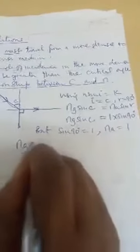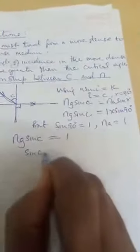So our n glass, the sine of c, would be equal to 1. And therefore the sine of c would be equal to 1 over n glass.